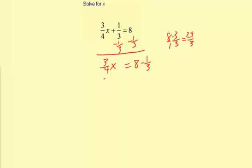So now I can say I have 3/4x equals 24/3 minus 1/3. So 3/4x equals 24 minus 1, which is 23, over 3.